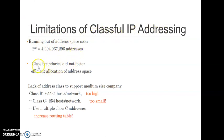The second limitation is that class boundaries did not foster efficient allocation of address space, meaning there is less flexibility in Classful IP Addressing. In Classful IP Addressing, the network ID and host ID bits are fixed depending on whether it is Class A, B, or C. So there is very little flexibility — we cannot set how many bits we need for the network or how many bits we need for the host.